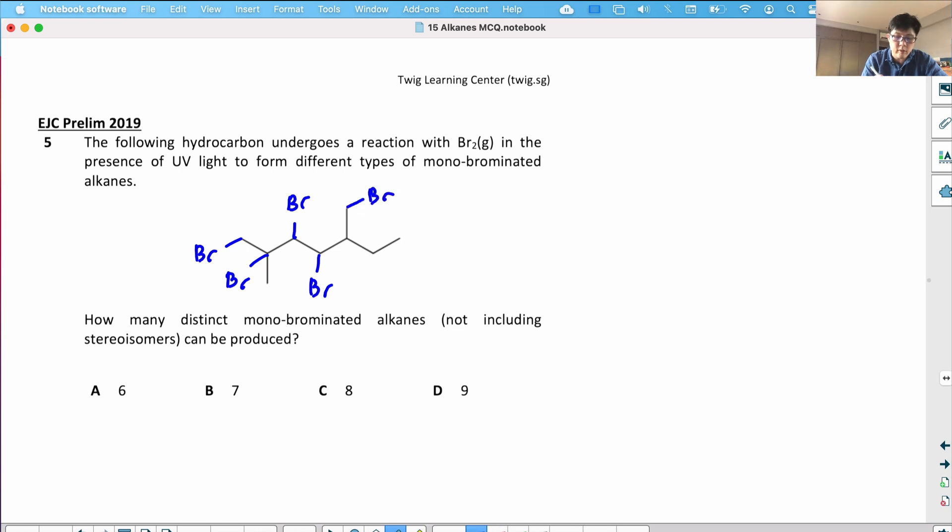There's a H over here that can be kicked out, so that becomes six, seven, and eight. So for this question, if you did it properly, you'll realize there's actually eight possible monobrominated alkanes.